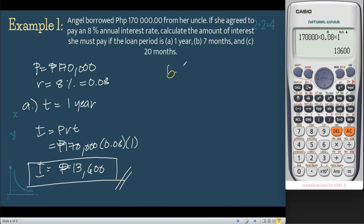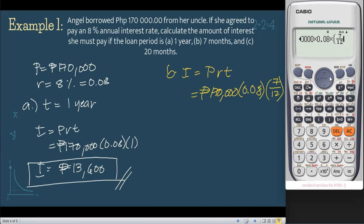For letter B, we have 7 months. Remember that using our formula, T is always in terms of years. So 7 months, we need to divide it by 12, because there are 12 months in 1 year. That will give us I equals PRT—$170,000 times 0.08 times 7 over 12. Using our calculators, that is $170,000 times 0.08 times the quantity 7 over 12, which is equal to $7,933.33.